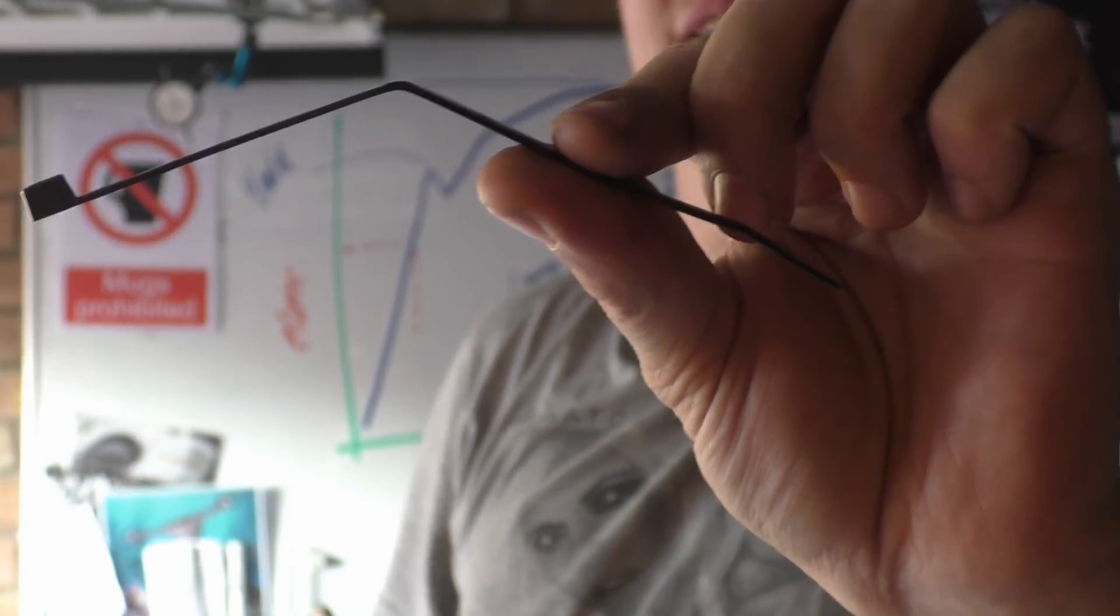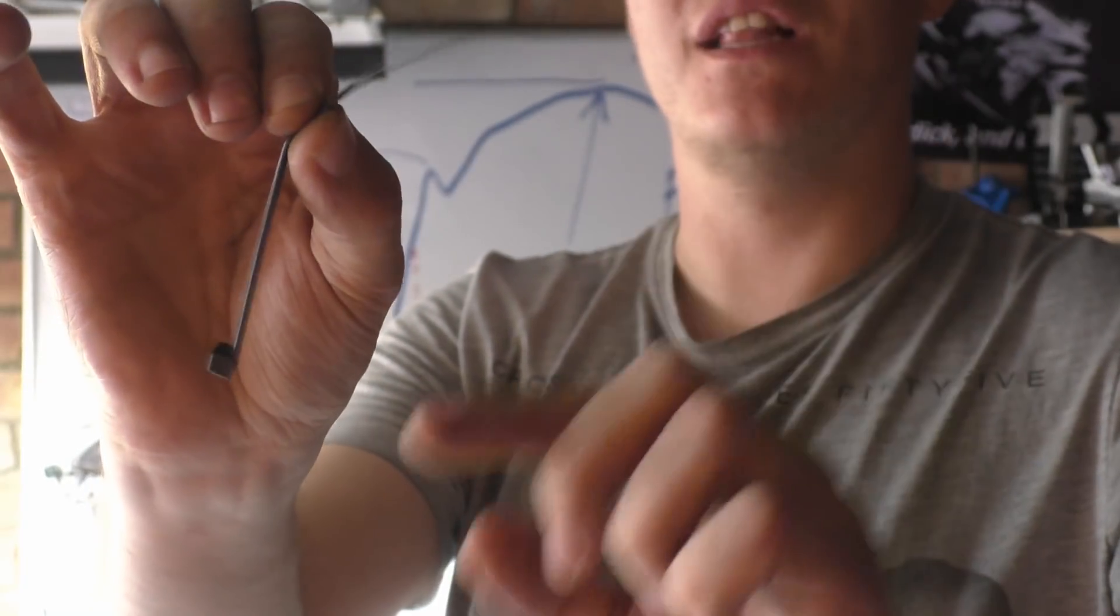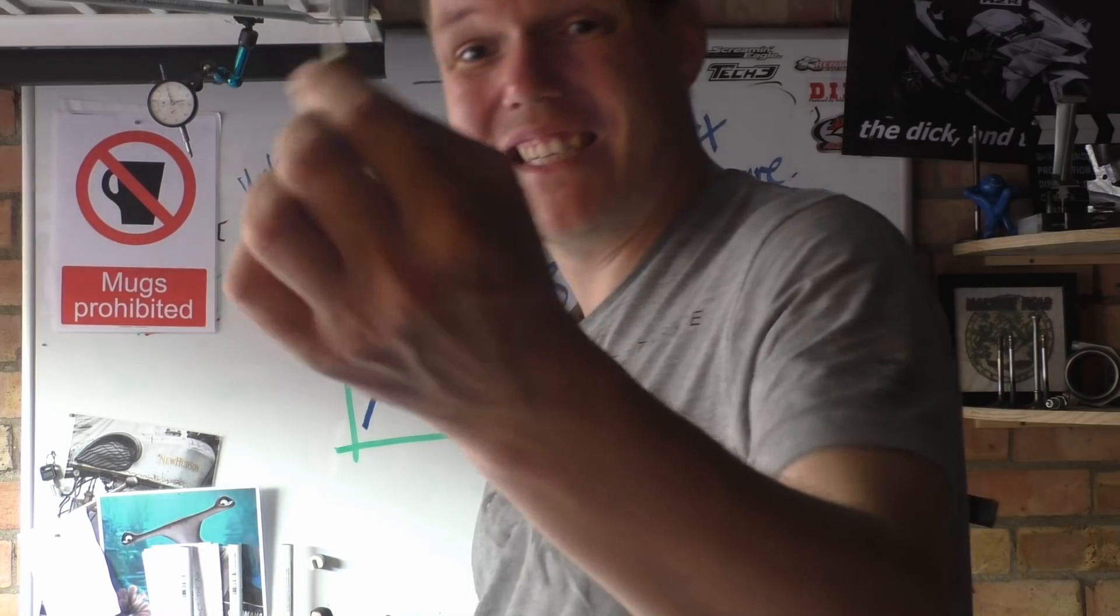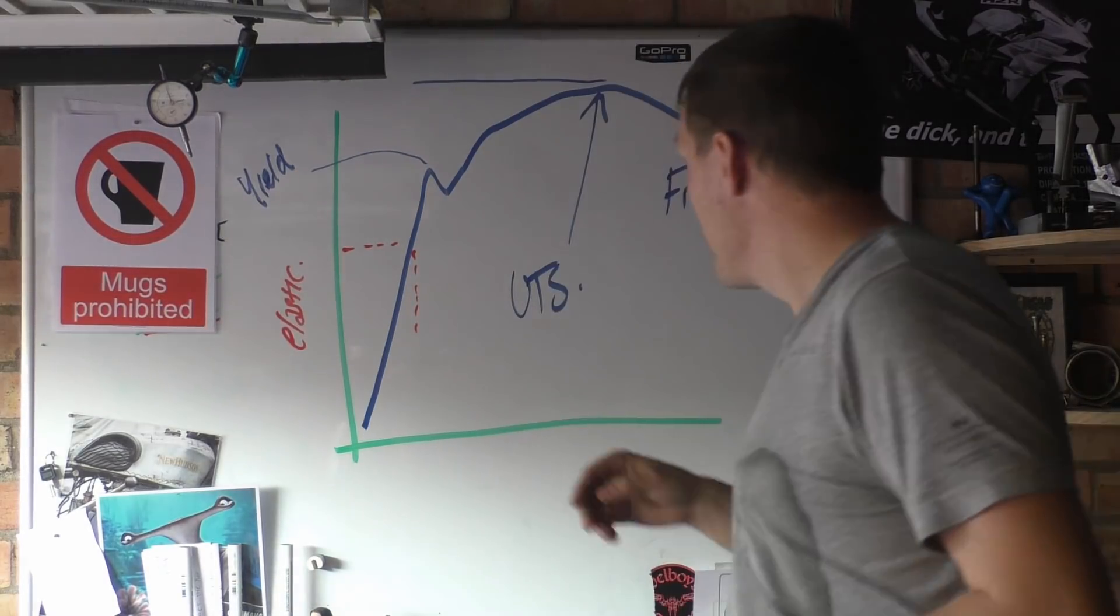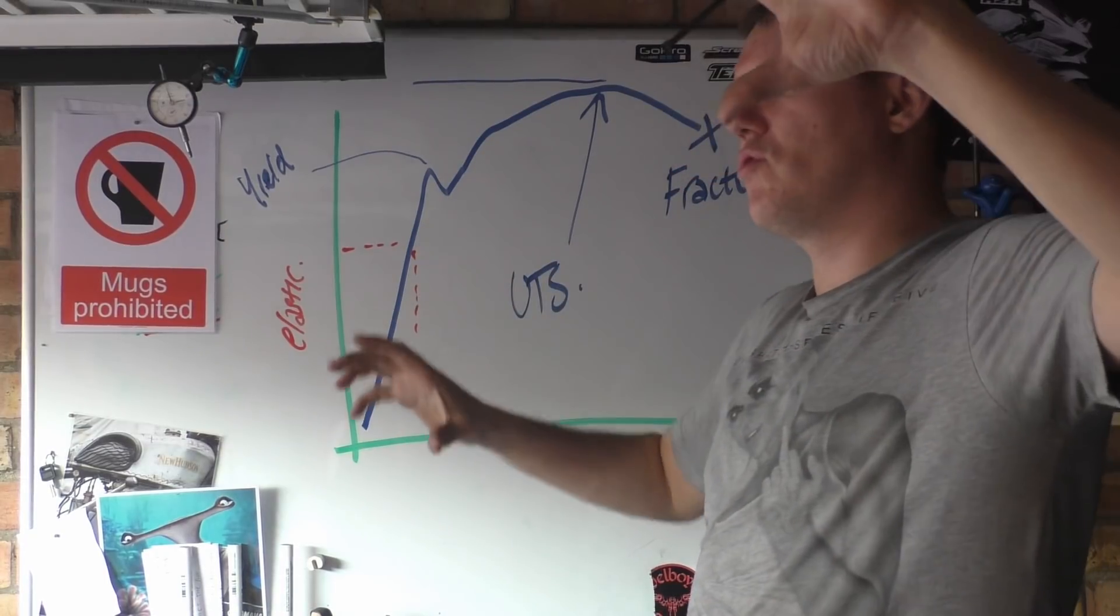That is now plastically deformed. We've gone from this, which is elastic deformation, to that. That is now plastically deformed. That is yielding. That is this point. We have basically come to the point where the structure, the atomic structure, can bend and then it can flex back.